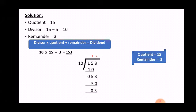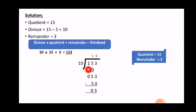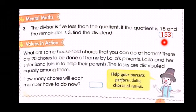You can see that we have the same quotient and remainder as in the question — 15 and 3. That means we found the correct dividend. So write the answer 153 in the given box, because we had to find the dividend. 153 is our dividend.